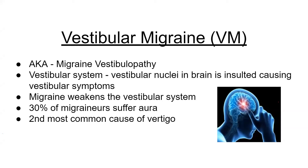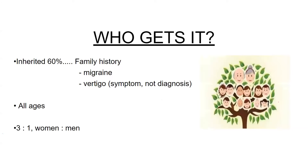The migraine eases off and the vestibular system gradually recovers, but sometimes it doesn't fully recover. People are left with residual low-grade symptoms persisting between episodes because, even though the migraine is gone and the storm has passed, the storm damage is still there — that weakness hasn't fully recovered. This is quite prevalent: 30 percent of migraineurs suffer from aura. Research has shown vestibular migraine is the second most common cause of vertigo, though the speaker believes it is actually the most common — simply underdiagnosed.